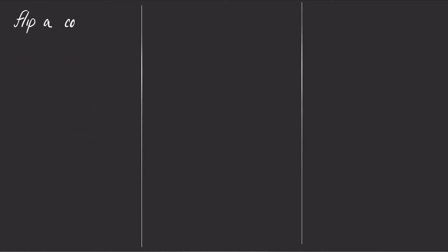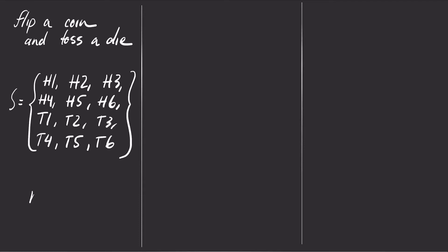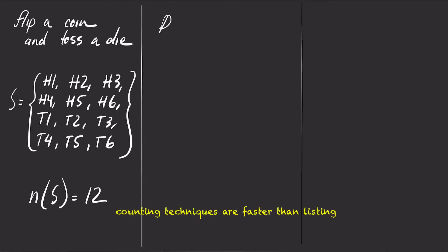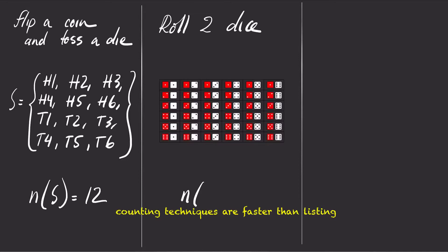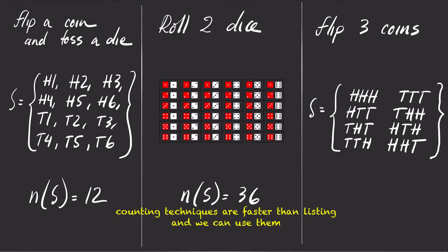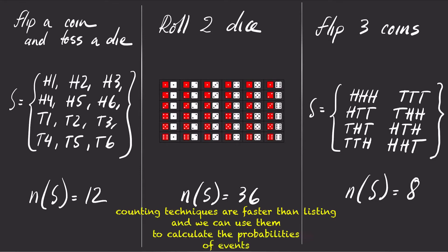For any experiment, we can find the sample space by listing all possible outcomes one by one. But there are counting techniques that we can use to quickly count things without having to list them one by one, and we can use these counting techniques to find the probabilities of events.